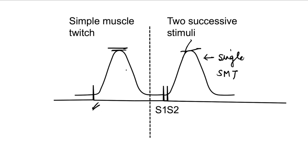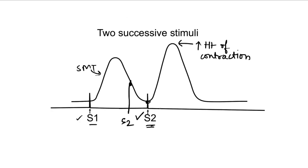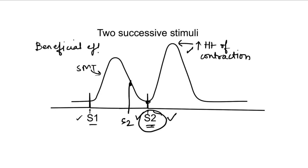Let's quickly look at the reasons for all these effects. When the second stimulus is given at the end of the relaxation period, we get an increased height of contraction. This effect is due to a beneficial effect caused by the first contraction. Due to the stimulus and the resulting muscle action potential, there is a release of calcium in the muscle. Calcium is important for excitation-contraction coupling and causes the contraction of the muscle.